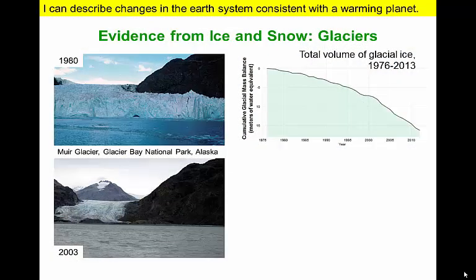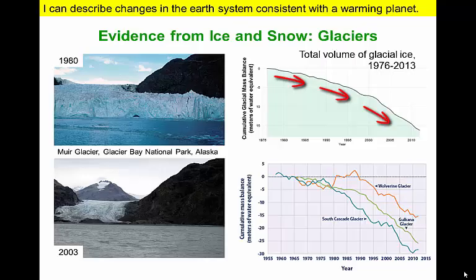The total volume of glacial ice on Earth has declined steadily for several decades. The 1980 photograph on the top left shows the end of the nearly 50-meter-high Muir Glacier in Alaska. The lower image, taken 23 years later, documents that the glacier has retreated more than 2 kilometers and has thinned by several hundred meters. The graph in the lower right shows the cumulative mass balance of three U.S. Geological Survey benchmark glaciers from Alaska and Washington. Negative values indicate a net loss of ice and snow compared with their condition in 1965.